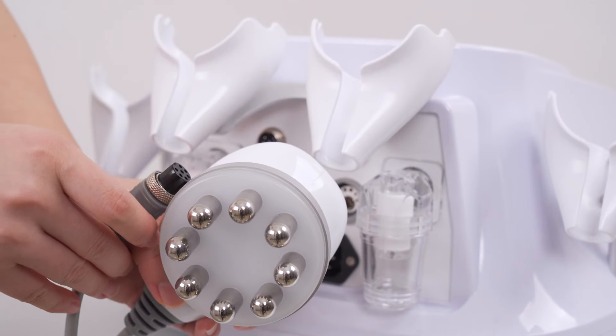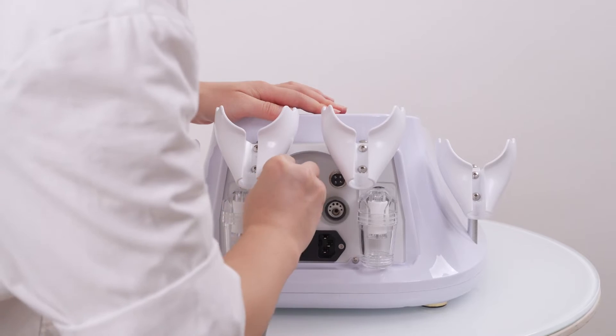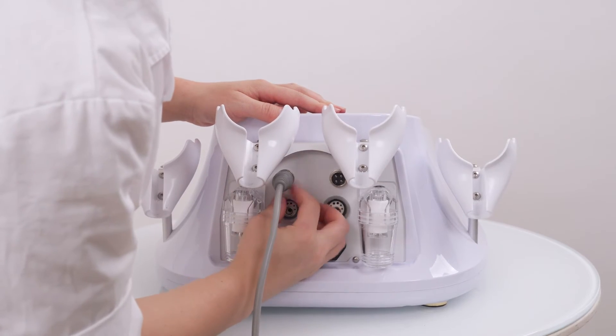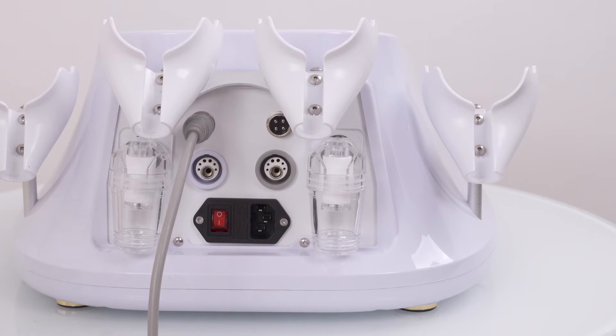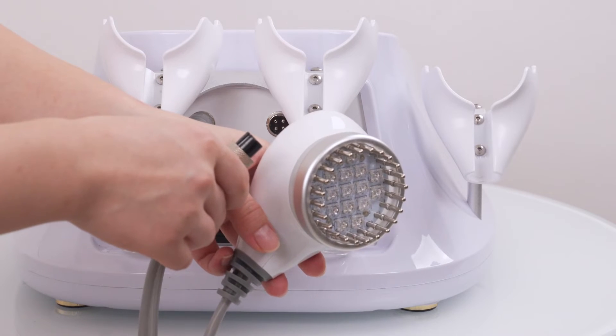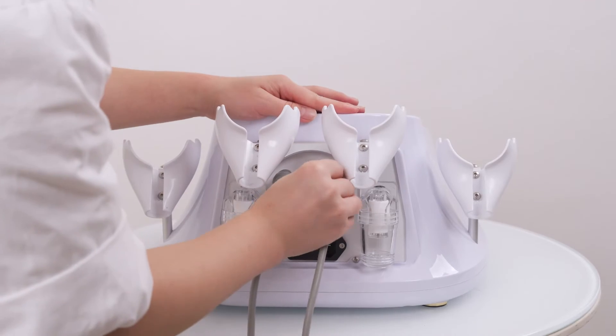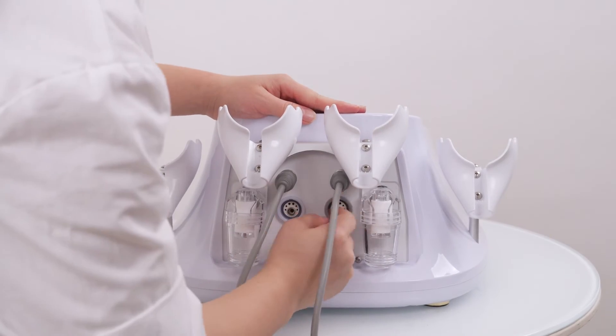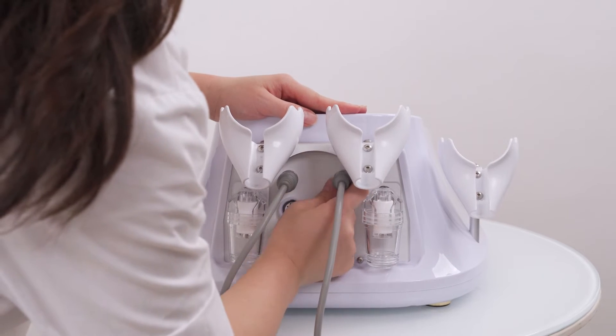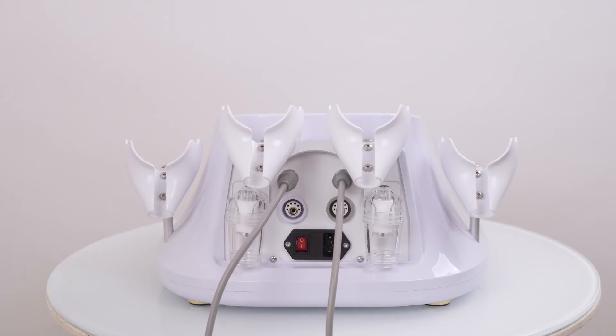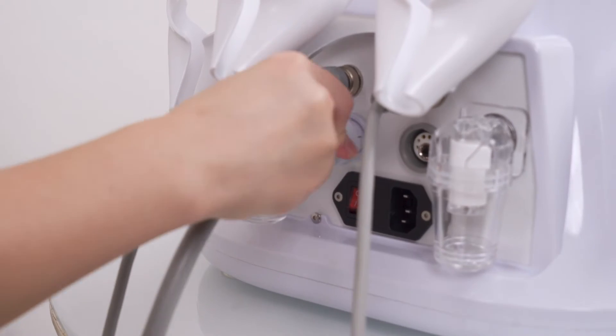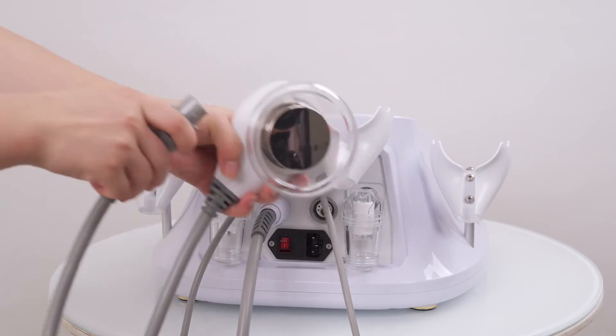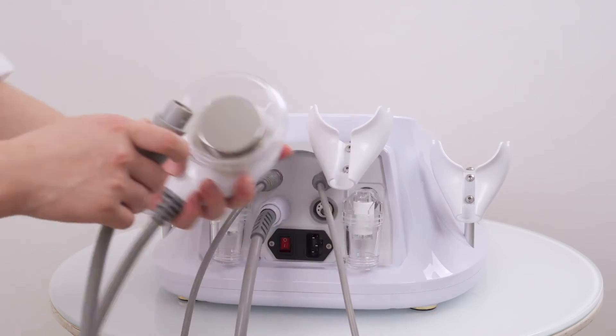Connect the Storm 8-polar RF handpiece to the machine. Connect the Storm photon microcurrent handpiece to the machine. Connect the Storm RF and suction handpiece to the machine. Connect the Storm vacuum and cavity handpiece to the machine.